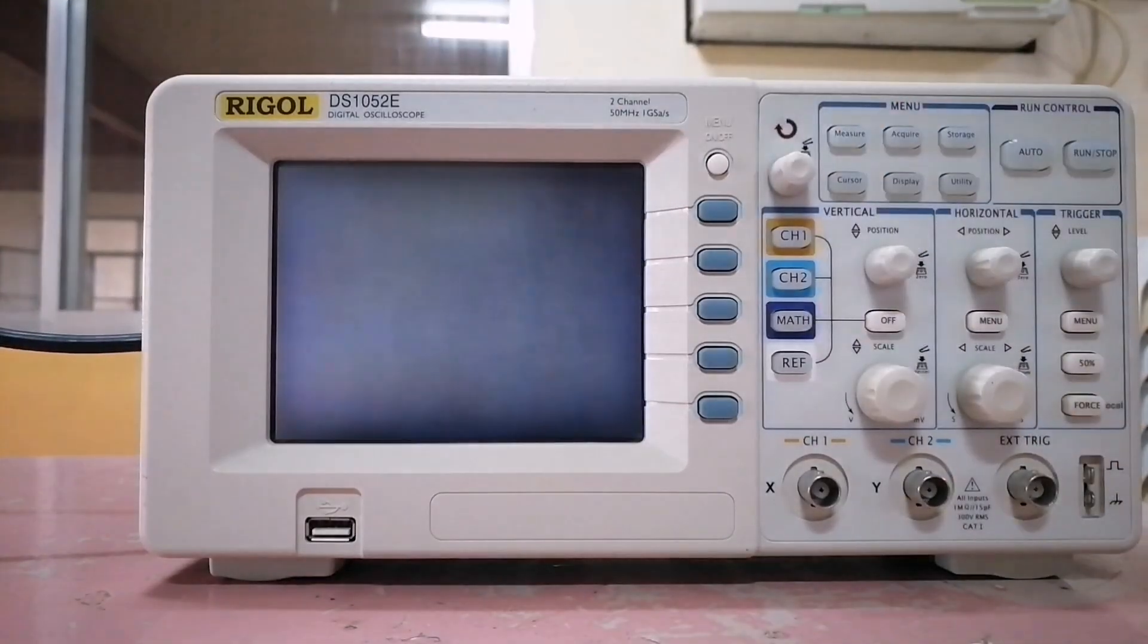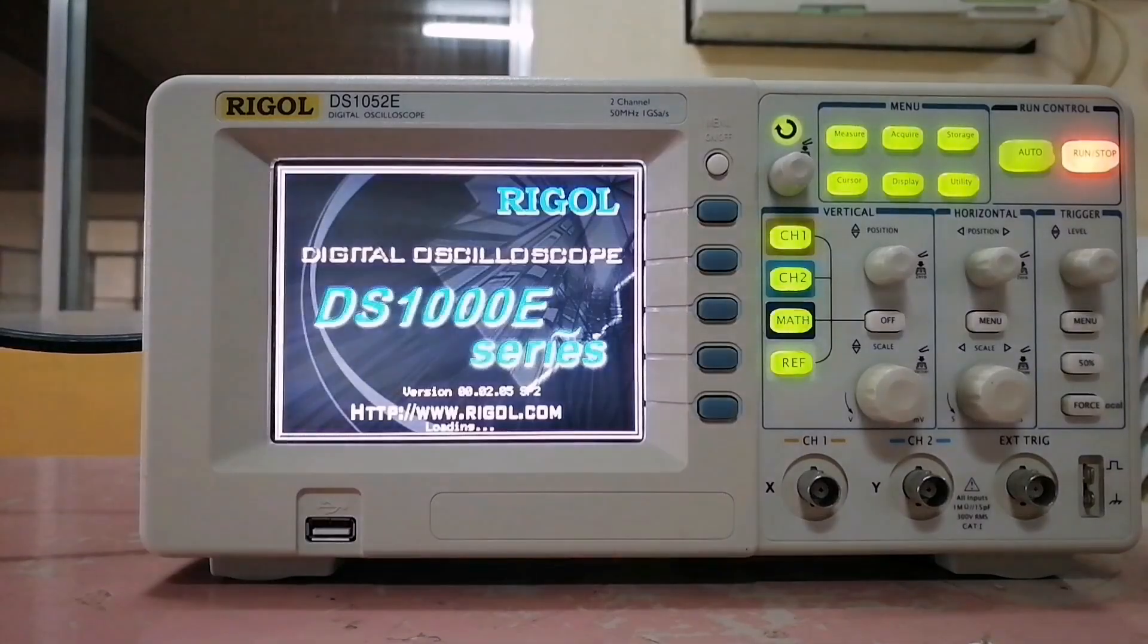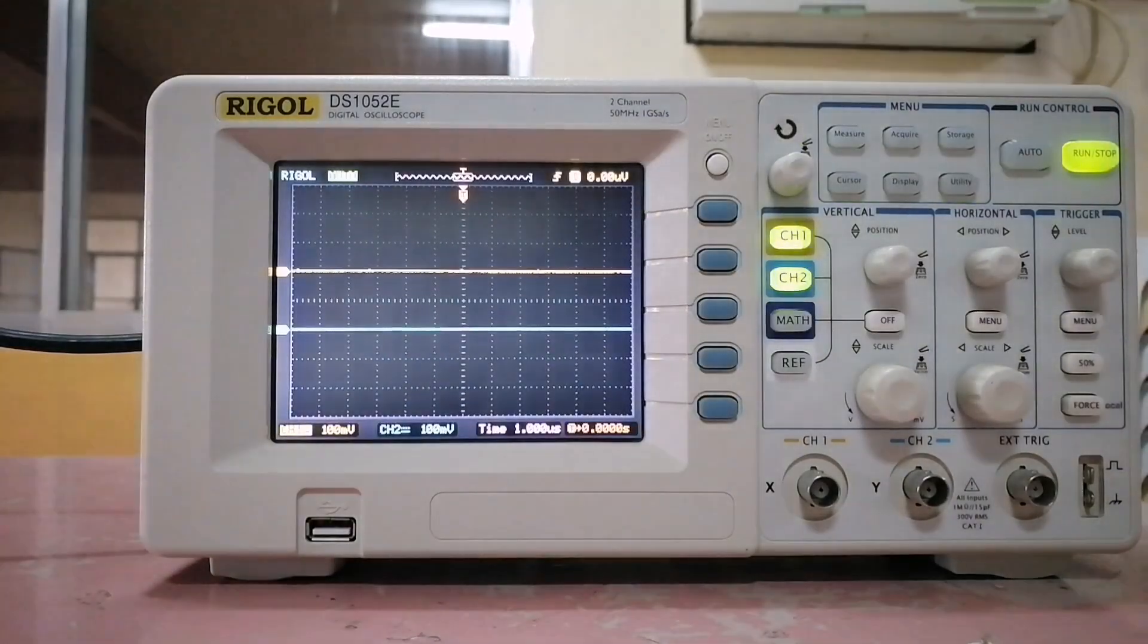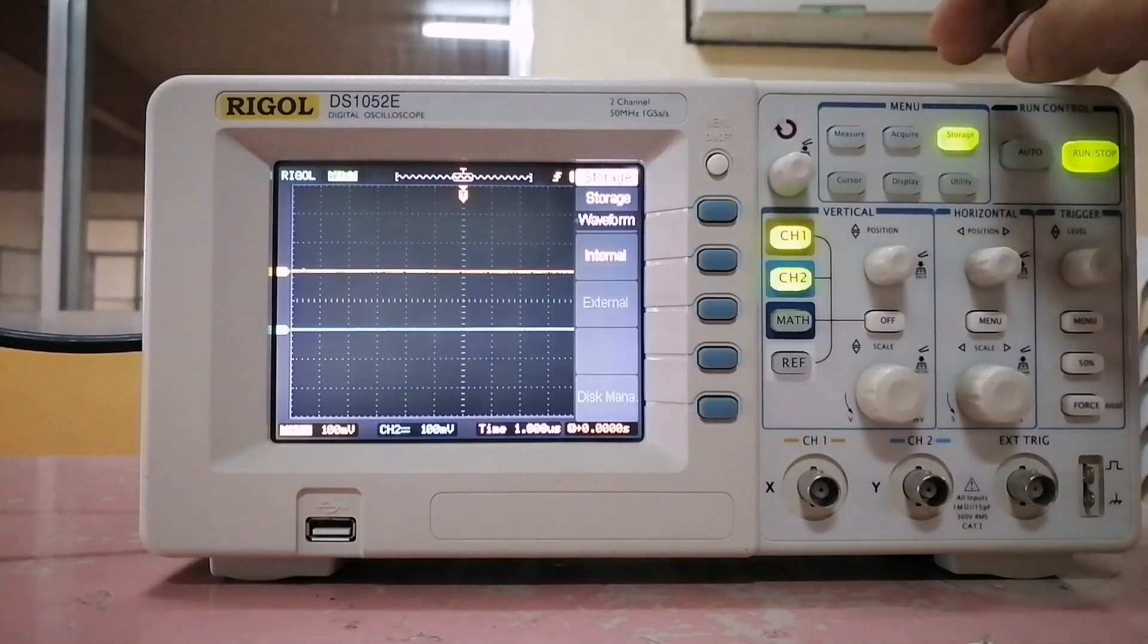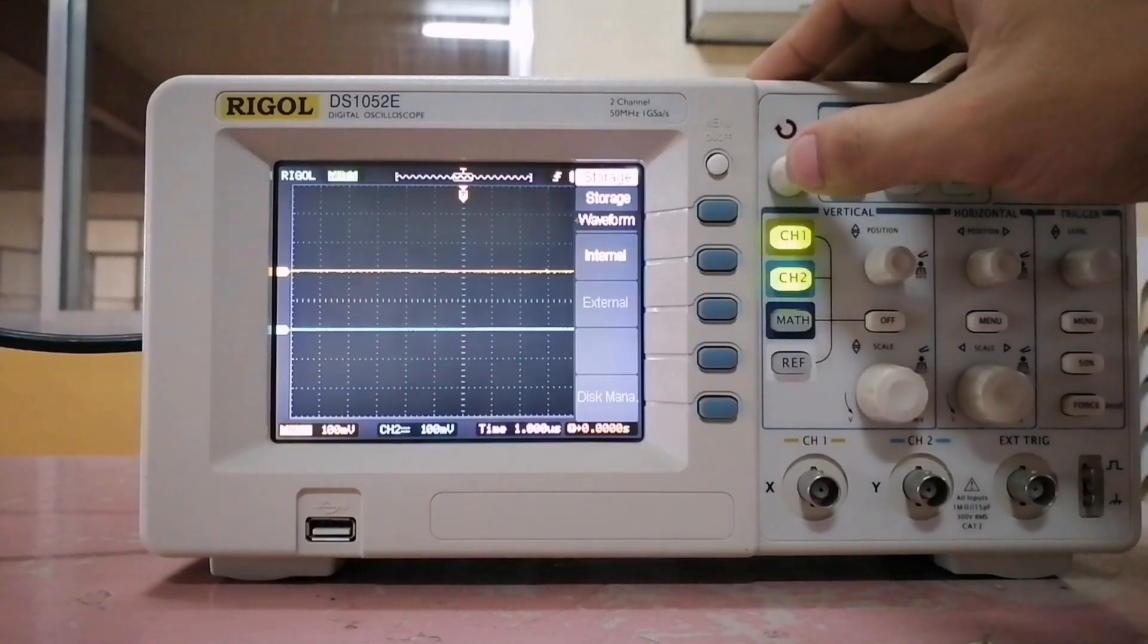So, let's turn on the scope. To make sure that everything is set to factory default, press storage, then select waveform.